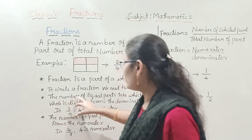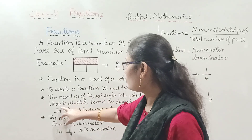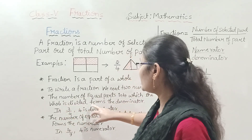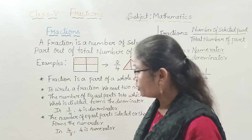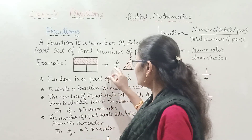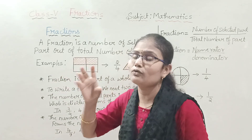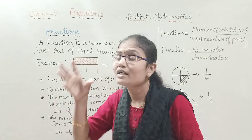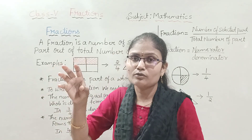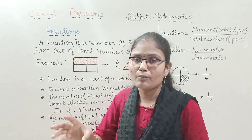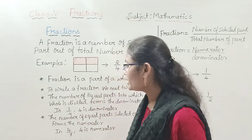The number of equal parts into which the whole is divided forms the denominator. For example, if we divide a whole figure into four equal parts, that total number of parts — four — represents the denominator.